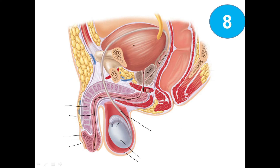This is the urinary bladder, ureter, and the rectum and anus. Other structures are also mentioned.